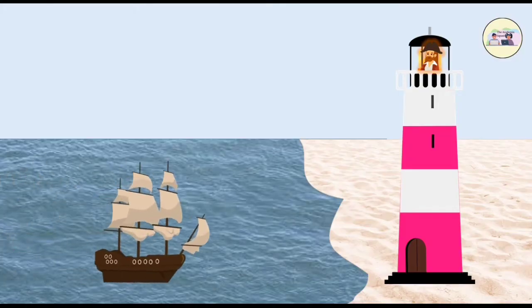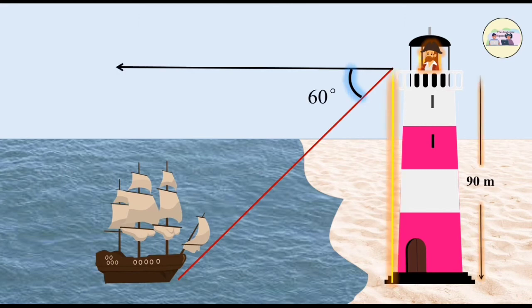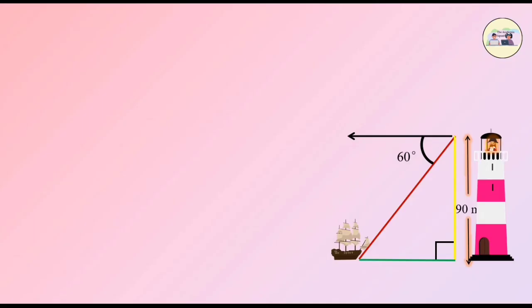Question 2: From the top of a lighthouse, an observer looking at a ship makes an angle of depression of 60 degrees. If the height of the lighthouse is 90 meters, find how far the ship is from the lighthouse. Consider root 3 equal to 1.73.